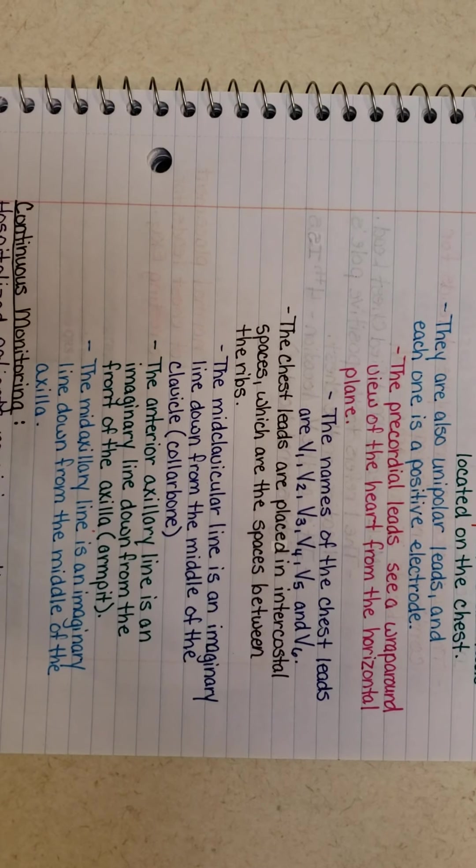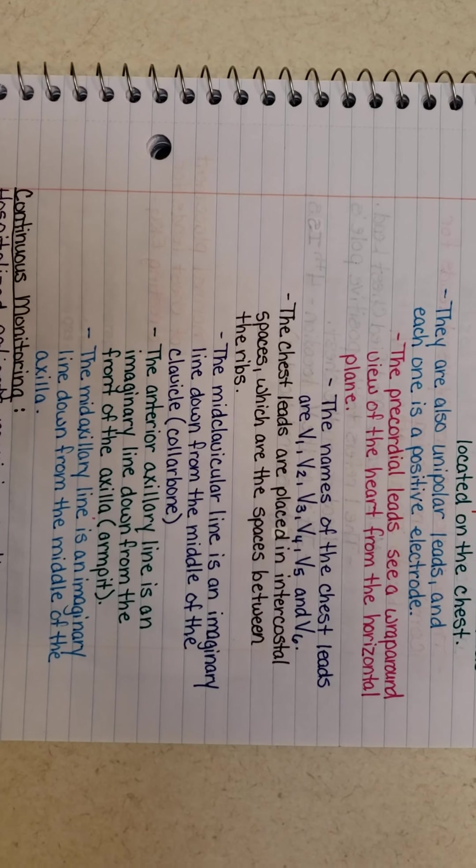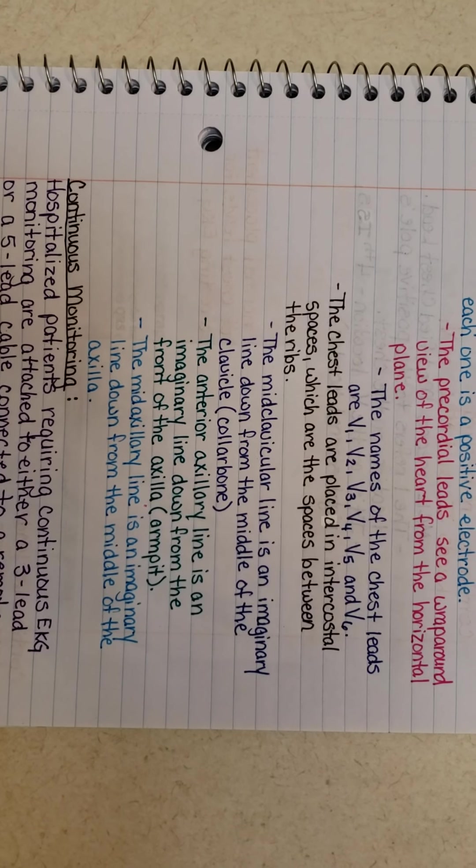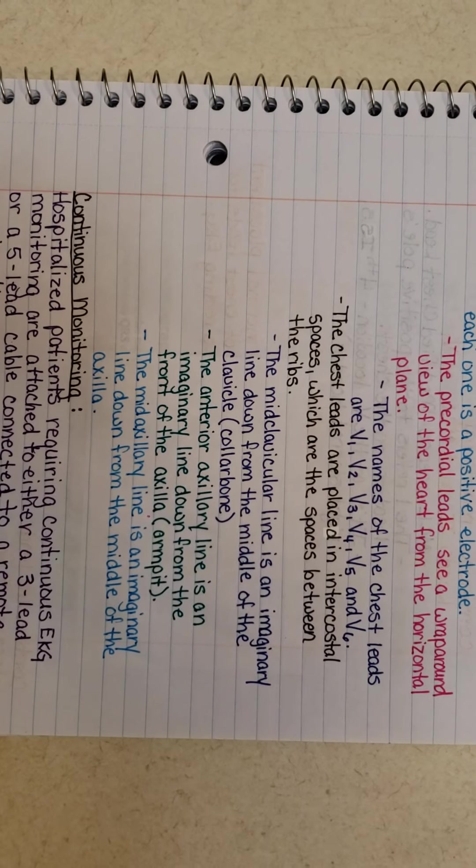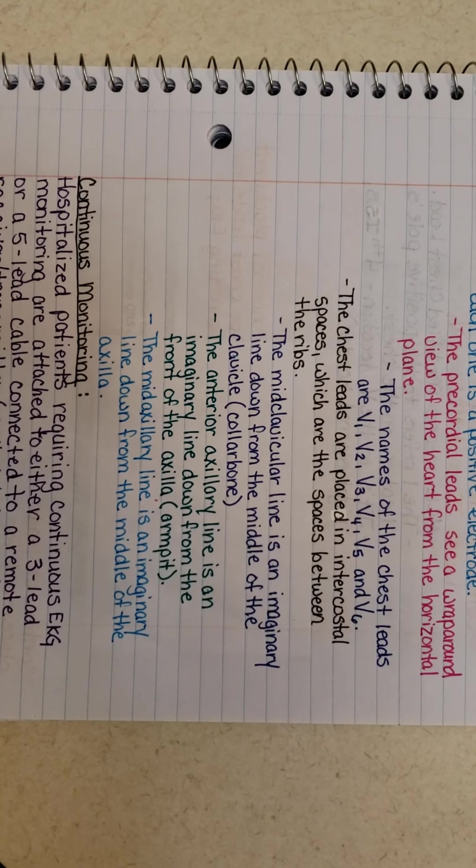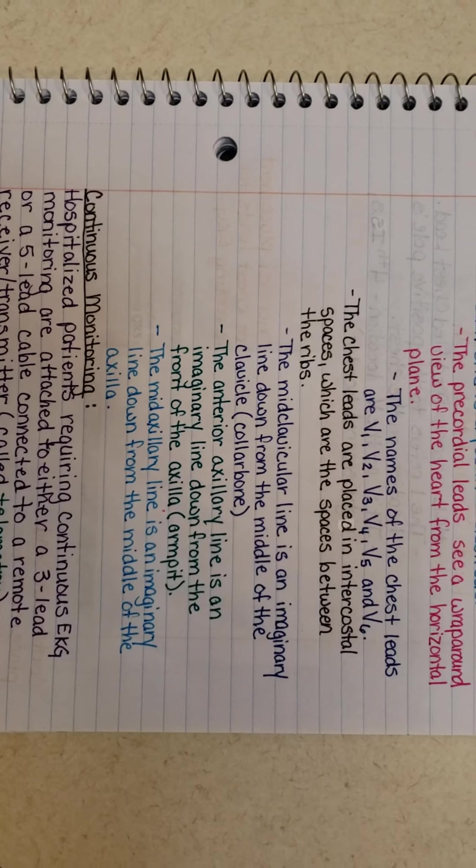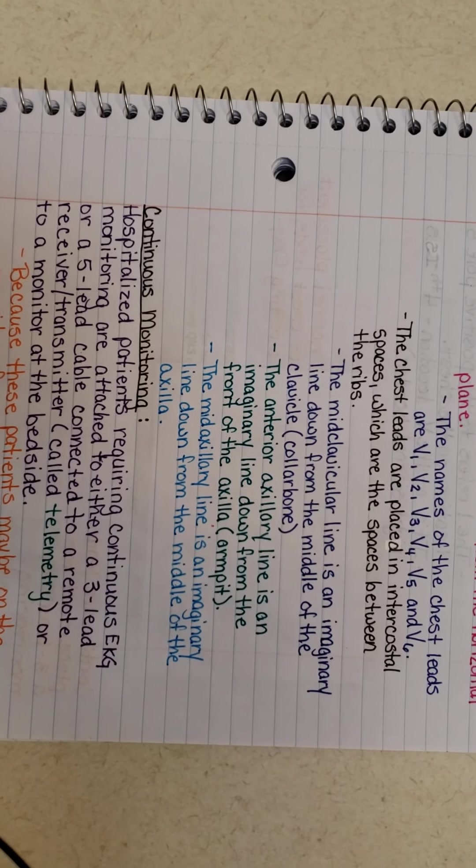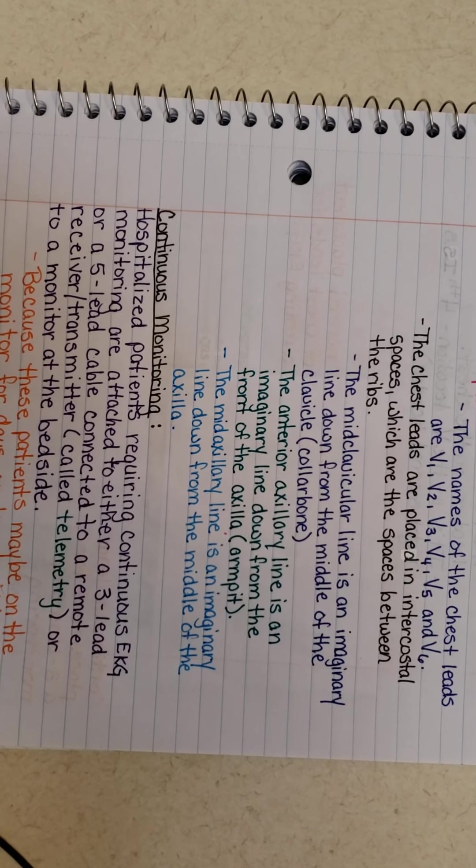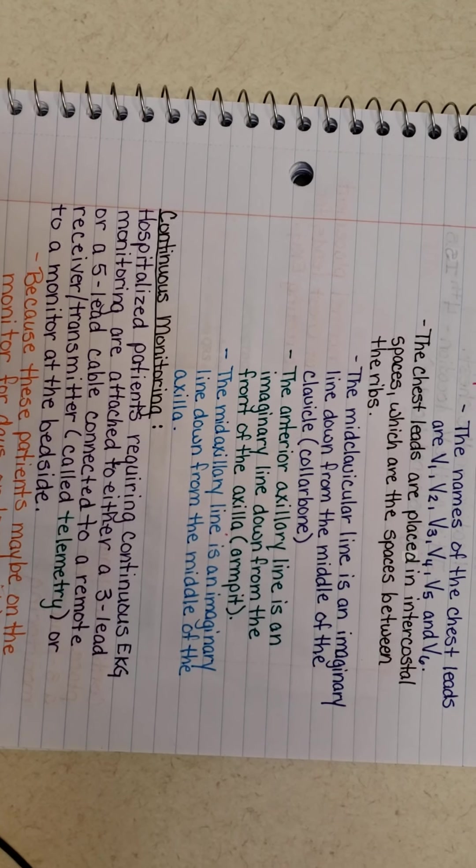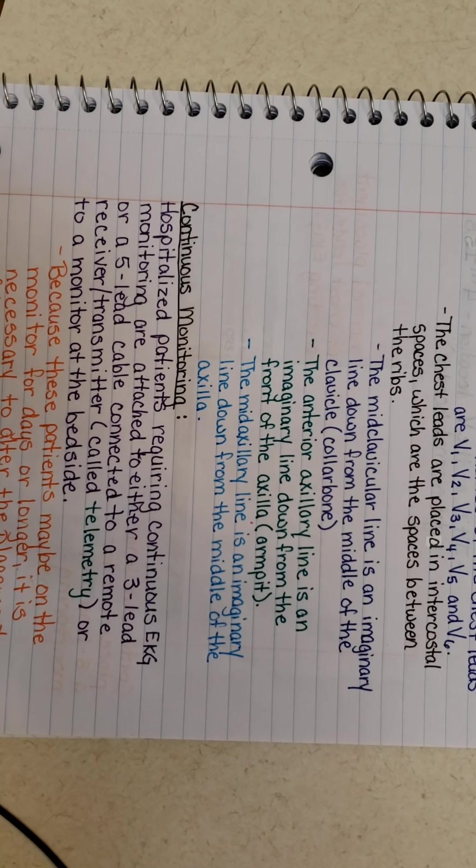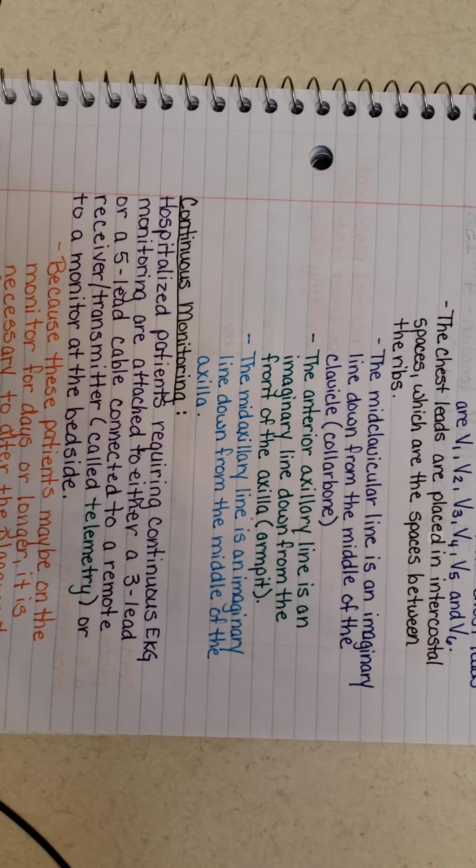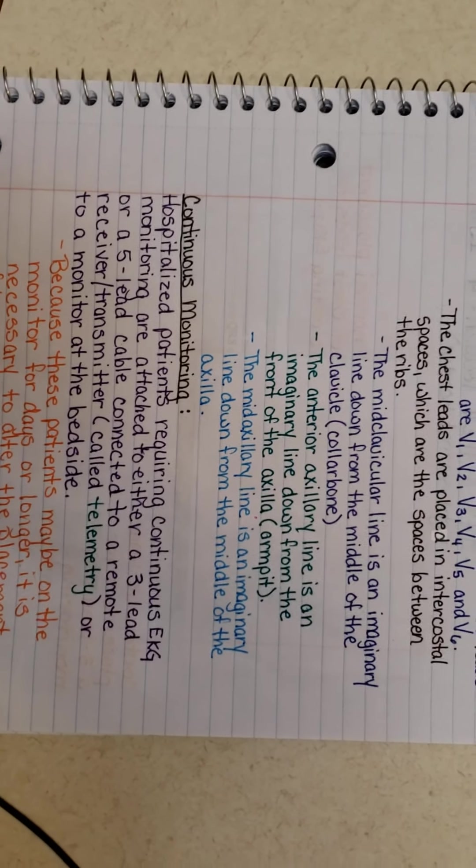The chest leads are placed in intercostal space, which are the spaces between the ribs. You have the mid-clavicular line, which is an imaginary line down from the middle of the clavicle, which is your collarbone. Then you have the anterior axillary line, an imaginary line down the front of the axillary or armpit. Then you have the mid-axillary line, which is an imaginary line down the middle of the axillary, which is your armpit again.